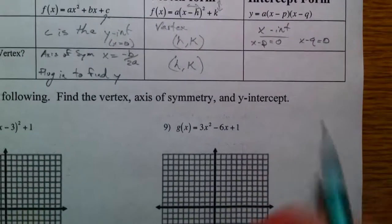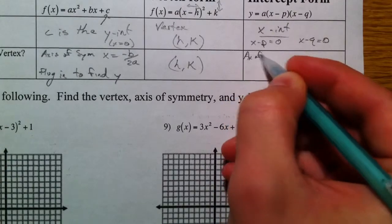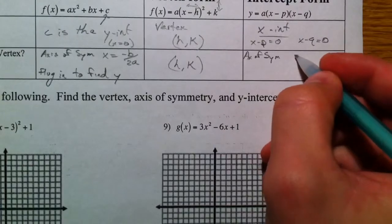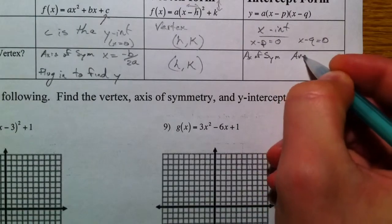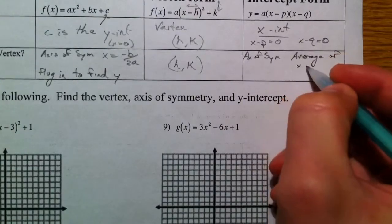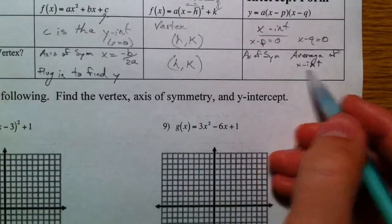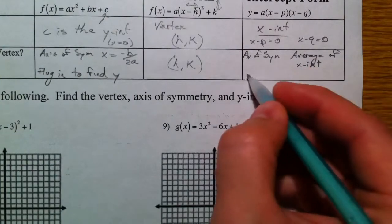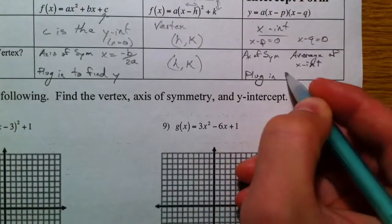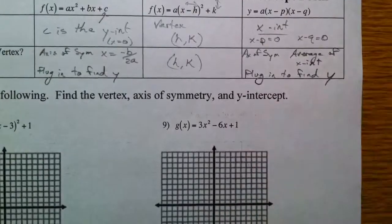Where's the vertex? The axis of symmetry is the average of the x-intercepts. Find it. Average them together. Add and divide by 2. Plug in to find y. All right, one example from each to finish this out.